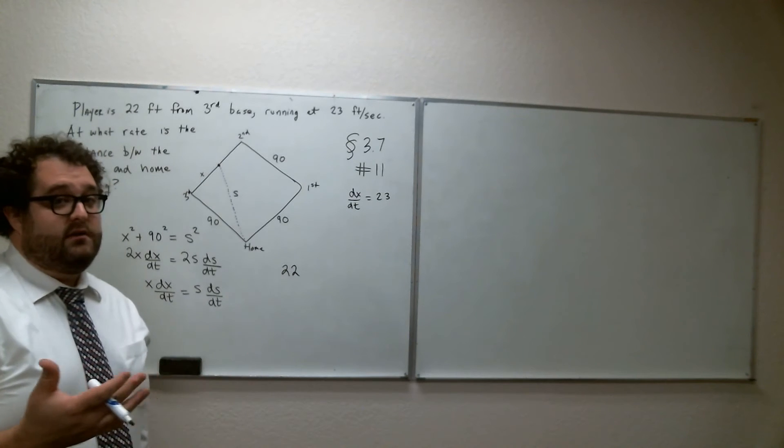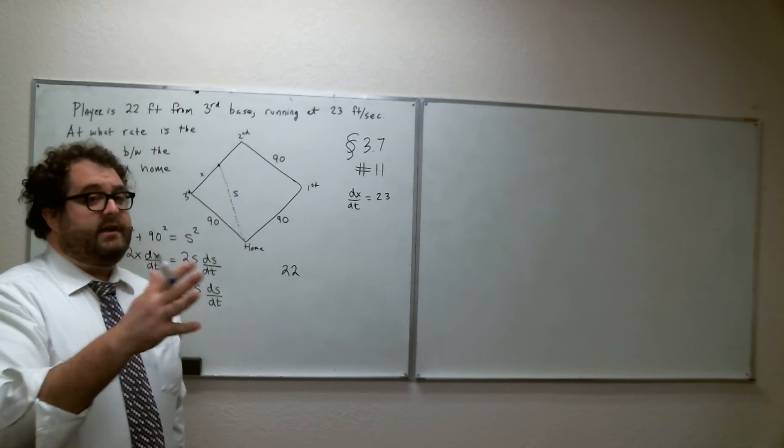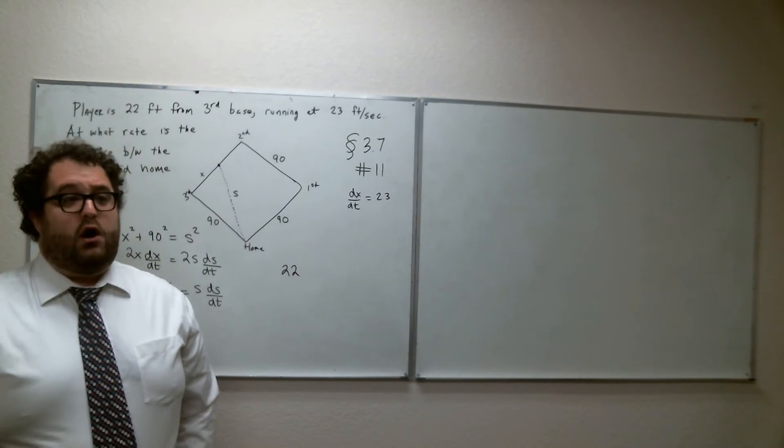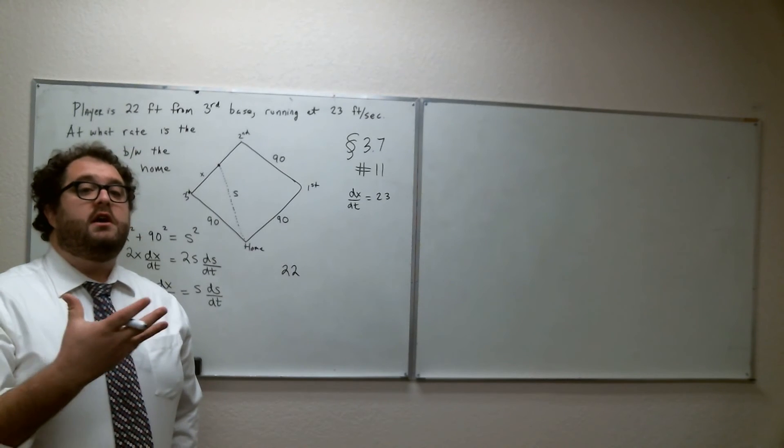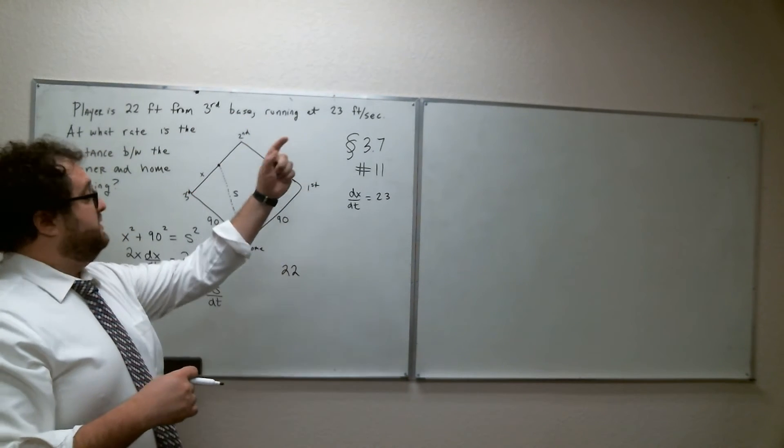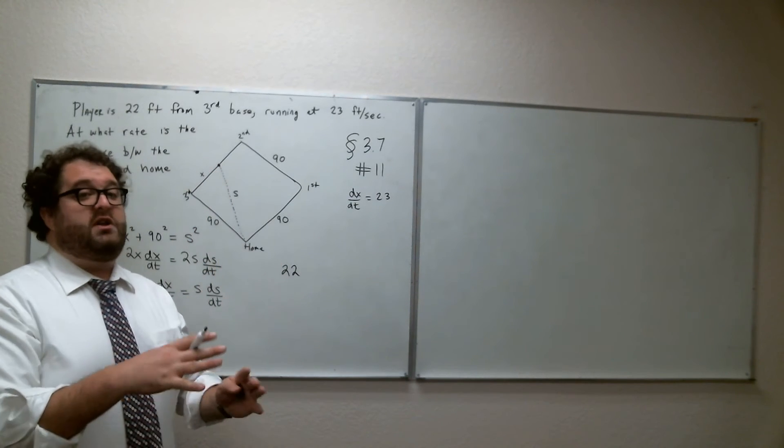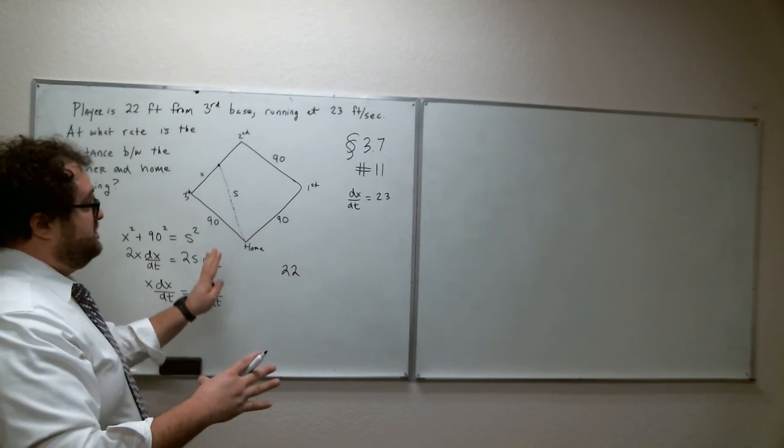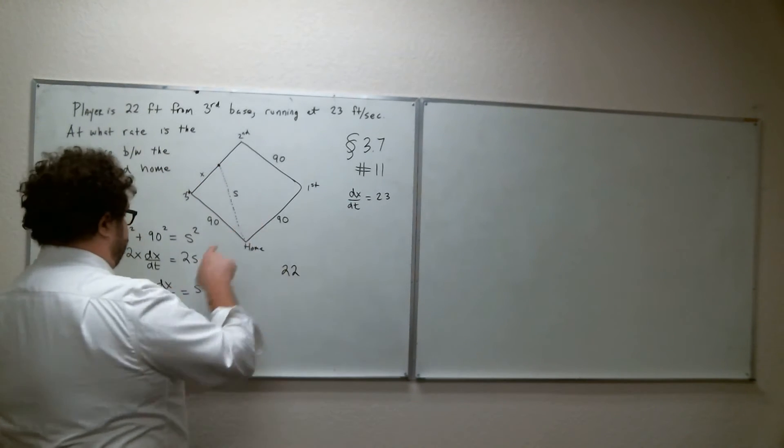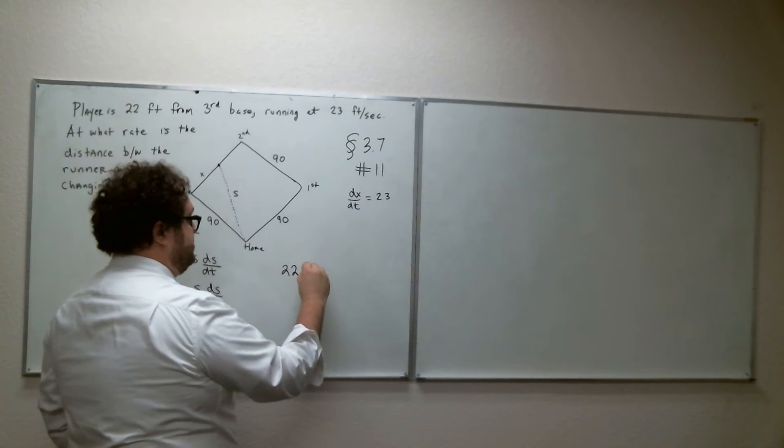That's kind of the tricky thing, is that these related rates scenarios aren't going to tell you DX/DT equals this, DS/DT equals that, solve for DY/DT, or whatever. You have to translate, and when we see running at 23 feet per second, that's telling us that something is changing at 23 feet per second. What is it changing? Well, look at our diagram. That's X is changing. So DX/DT is 23, so make that substitution.